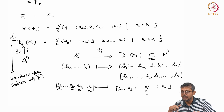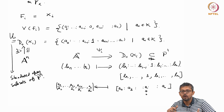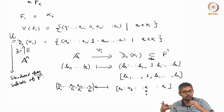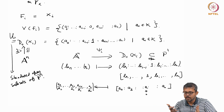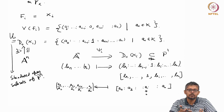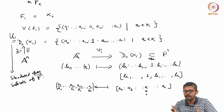Notice that D+(x_i) is an open subset of P^n, and A^n is an affine space — both have a topology. D+(x_i), which I call U_i, these are called standard open subsets of P^n. Both have a topology: one comes as an open subset with the induced topology, because P^n has a Zariski topology, and A^n also has a topology. My claim is that this psi_i is a homeomorphism.